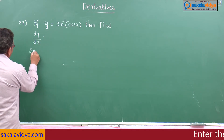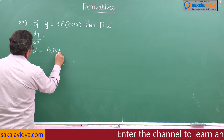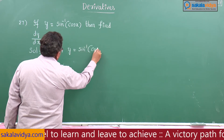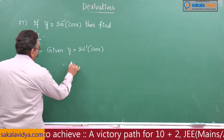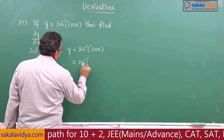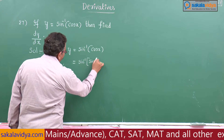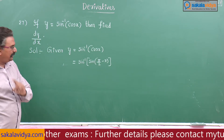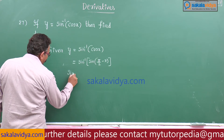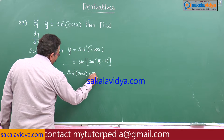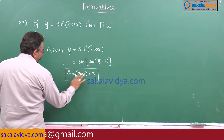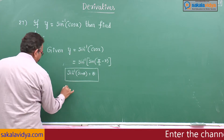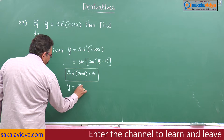Now, solution: given y equals to sin inverse of cos x. This sin inverse of cos x is written in terms of sin, that means sin of (pi by 2 minus x). We have the formula in inverse trigonometric functions: sin inverse of sin x equals x. So y becomes pi by 2 minus x.